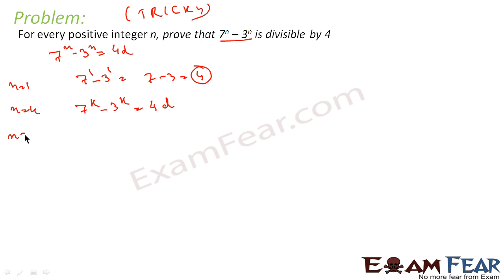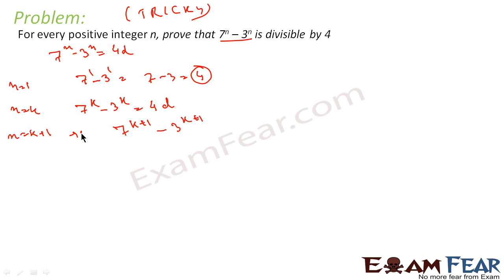Now we have to prove that for n equal to k plus 1 this is true. For n equal to k plus 1, the LHS will be 7 to the power k plus 1 minus 3 to the power k plus 1.